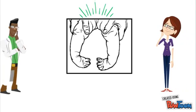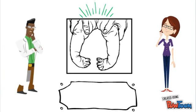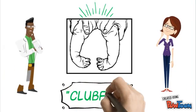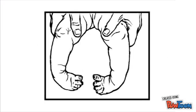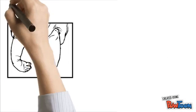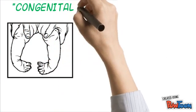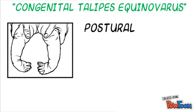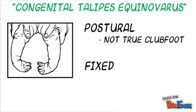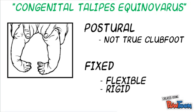In this video you will learn about the congenital limb deformity commonly known as clubfoot. A clubfoot deformity, otherwise known as Talipes equinovarus, can either be postural or fixed. Postural clubfoot is due to positioning of the fetus in the womb. Fixed clubfoot can be flexible or rigid. We will be focusing on fixed congenital clubfoot.